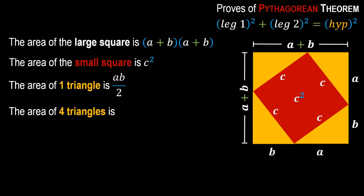To find the area of all four triangles, since each has area (a × b) / 2 and there are four of the same size, we multiply by four. Simplifying, the four-triangle area equals 2ab. This is also the area of the golden region, which is made up of those four triangles.